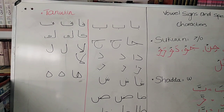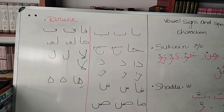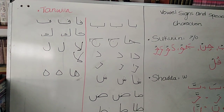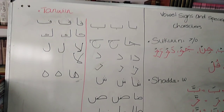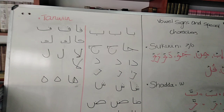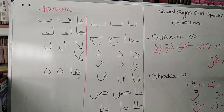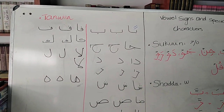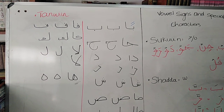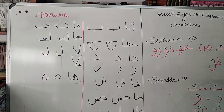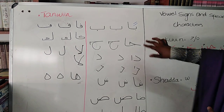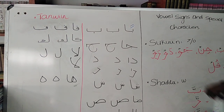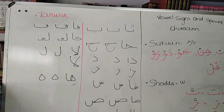We are now on the last part of the characters — tanwin. Tanwin is when we put double vowel signs. It is about generalization, when you talk about something indefinite. So here you will find two fatha. We will no longer say 'ba' but 'ban' because it's two fatha. Tanwin fatha will always go with an alif, no matter which way it is.